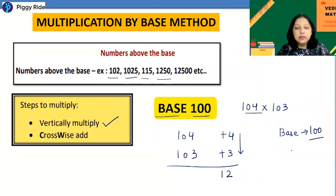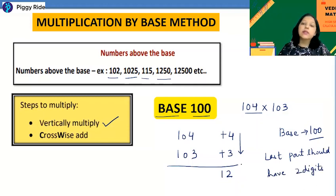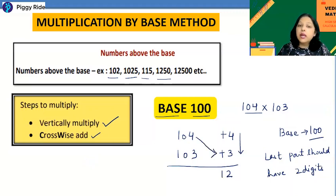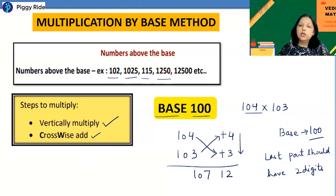Since the base is 100, the last part of your answer should have exactly two digits. Here 4 × 3 = 12, which already has two digits, so no extra work is needed. Now for the crosswise addition: either add 104 + 3 or 103 + 4 — the answer is 107 in both cases. So the final answer is 10712.